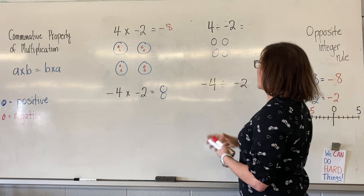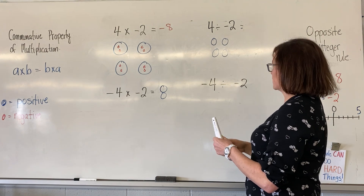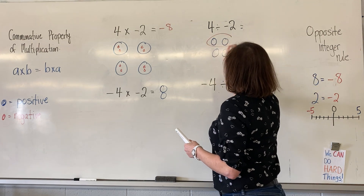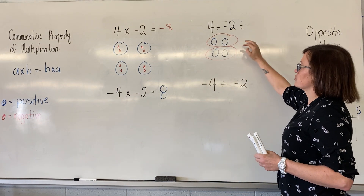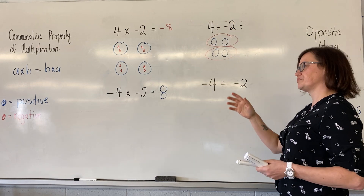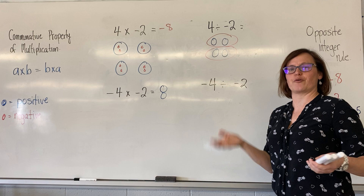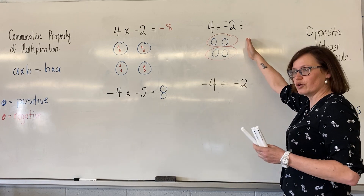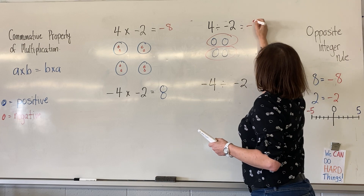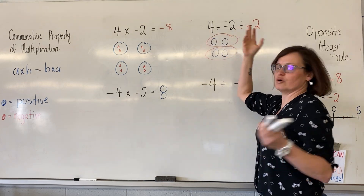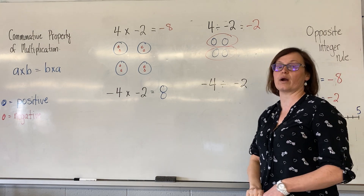So positive four divided by positive two gives me two groups with two in it — that equals two. When I apply the opposite integer rule to my answer, it's actually negative two. Again, four divided by two we know is two; we're just trying to figure out if it's positive or negative.